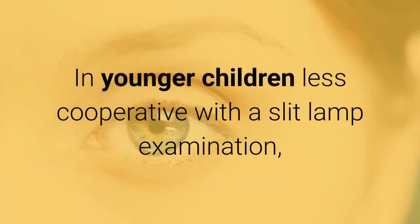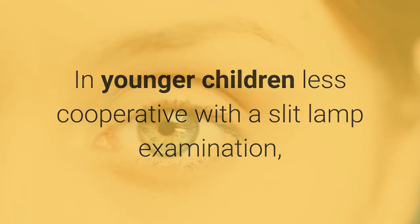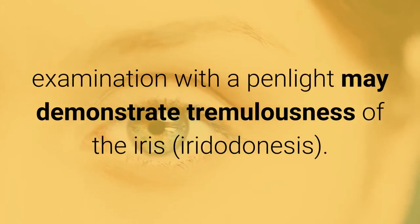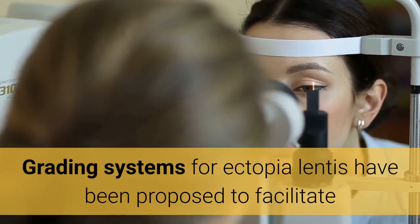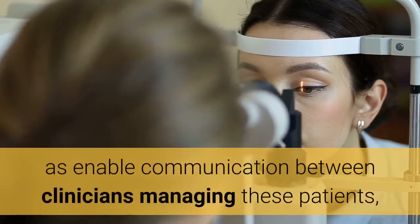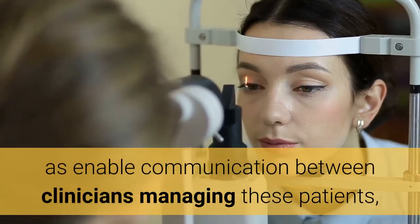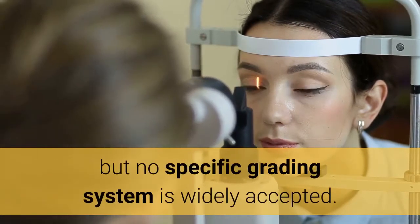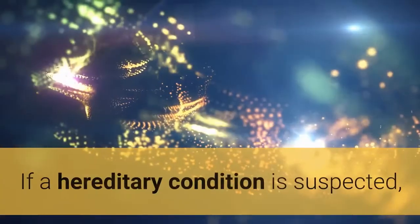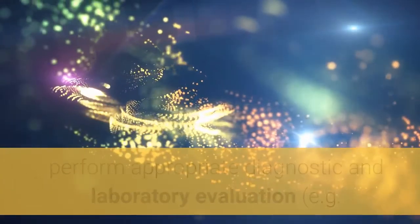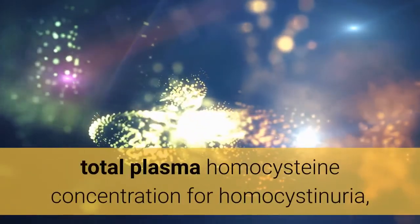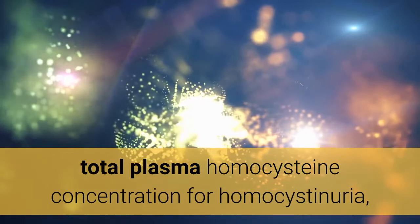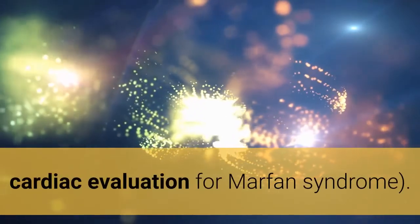In younger children less cooperative with a slit lamp examination, examination with a pen light may demonstrate tremulousness of the iris. Grading systems for ectopia lentis have been proposed to facilitate and standardize studies, as well as enable communication between clinicians, but no specific grading system is widely accepted. If a hereditary condition is suspected, perform appropriate diagnostic and laboratory evaluation, e.g., total plasma homocysteine concentration for homocystinuria, or cardiac evaluation for Marfan syndrome.